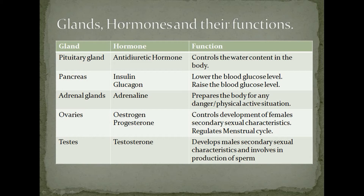Here's the table of glands, hormones, and their functions. The pituitary gland secretes anti-diuretic hormone, which controls the water content in your body. The pancreas secretes insulin and glucagon — insulin lowers blood glucose level and glucagon raises it. The adrenal glands secrete adrenaline, which prepares the body for danger or physical activity. The ovaries secrete estrogen, which controls development of female secondary sexual characteristics, and progesterone, which regulates the menstrual cycle. The testes secrete testosterone, which develops male secondary sexual characteristics and is involved in sperm production.